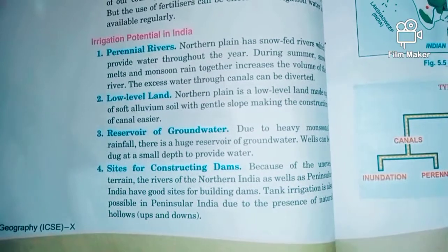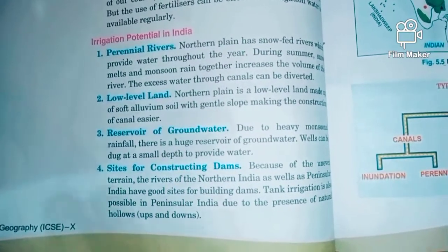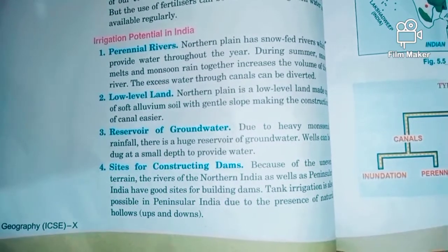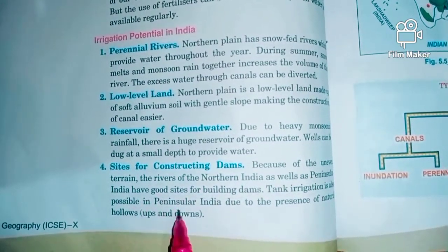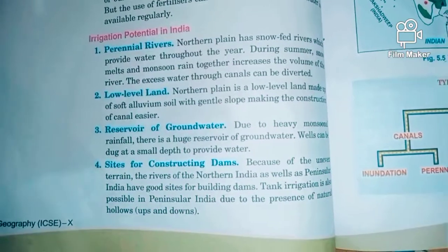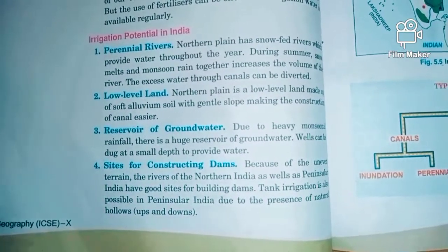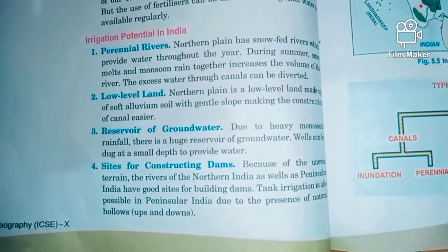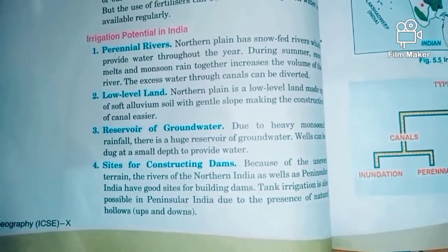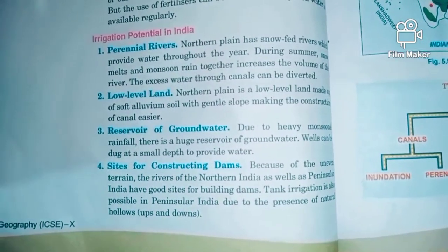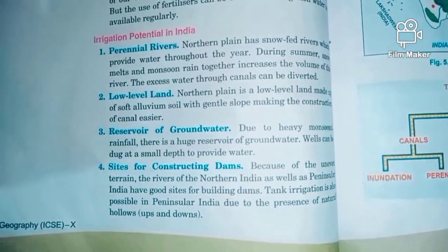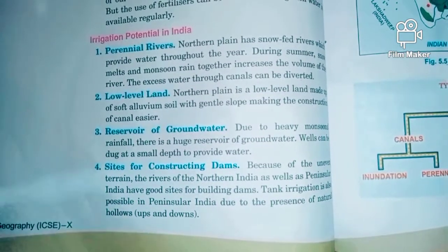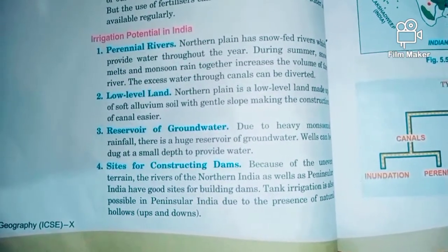The fourth important factor is the availability of sites for constructing dams. India has an uneven terrain with mountains, plains, and plateaus. Because of this undulating terrain and the northern rivers, there are good locations for building large dams to store water.